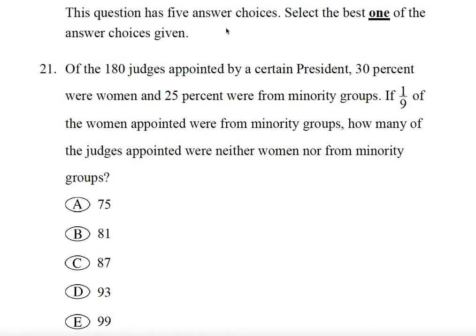This question has five answer choices. Select the best one of the answer choices given. Of the 180 judges appointed by a certain president, 30% were women and 25% were from minority groups. If one ninth of the women appointed were from minority groups, how many of the judges appointed were neither women nor from minority groups?